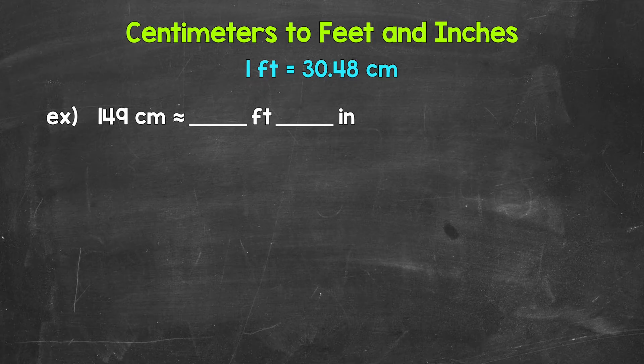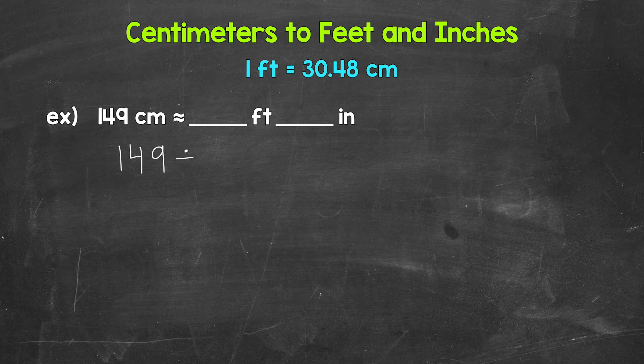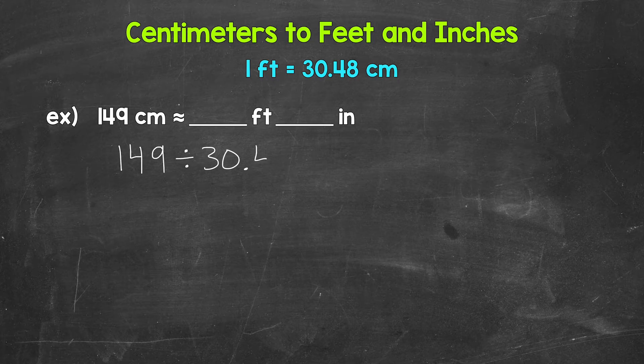As far as converting centimeters to feet, well, each group of 30.48 centimeters equals one foot. So how many groups of 30.48 centimeters in 149 centimeters? So we need to do 149 divided by 30.48.